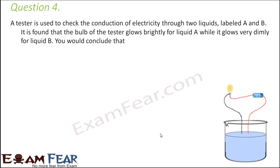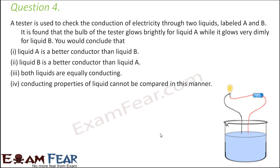Question number four: a tester is used to check conduction through two liquids A and B. The bulb glows brightly for liquid A but very dimly for liquid B. The more the bulb glows, the more electric current is being conducted. So better the conductivity, the more the glow. Since the bulb glows brightly for A, liquid A is a better conductor than liquid B because it allows more current to pass through it.